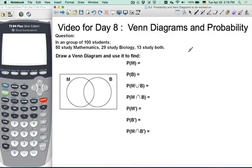Today we're moving on to the last topic of the probability unit where we're combining what we learned about sets and Venn diagrams to the context of probability problems. The question says, in a group of 100 students, 50 study mathematics, 29 study biology, and 13 study both.